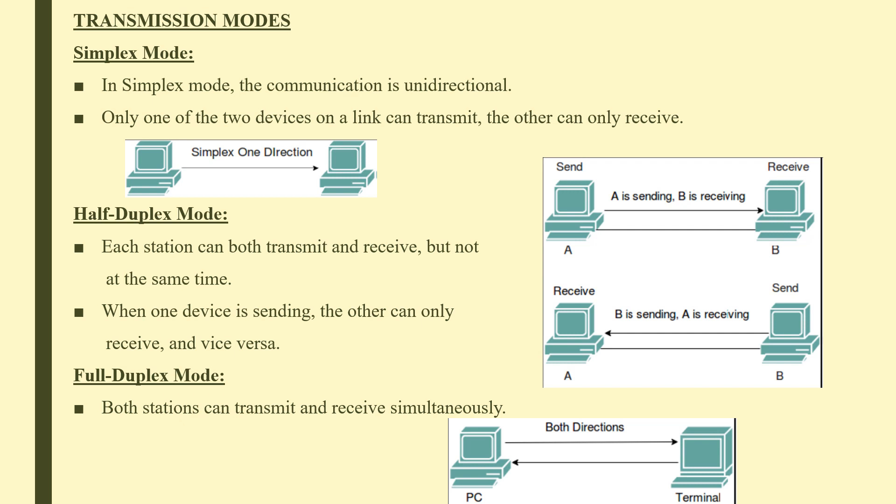In half duplex, when A is sending, B can only receive and vice versa. In full duplex mode, both stations can transmit and receive simultaneously; it is used when communication in both directions is required all the time, though channel capacity must be divided between the two directions. An example is the telephone network.